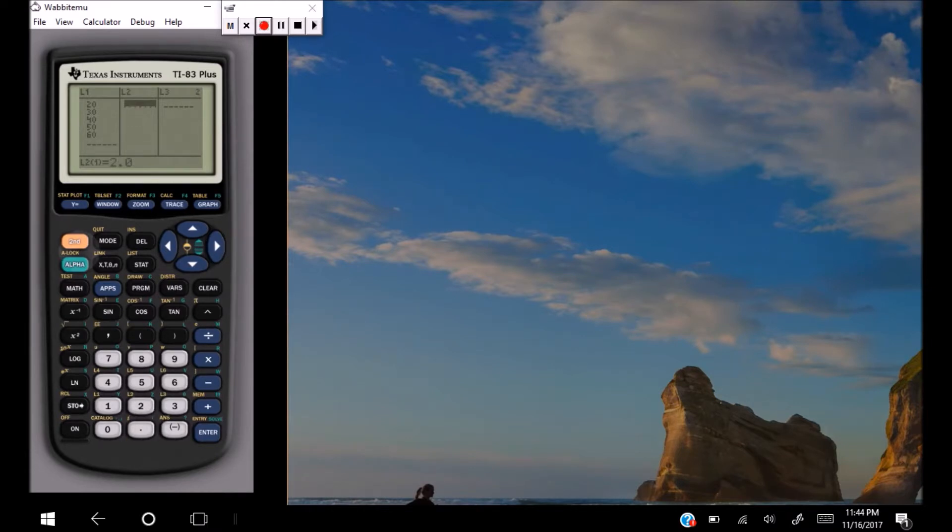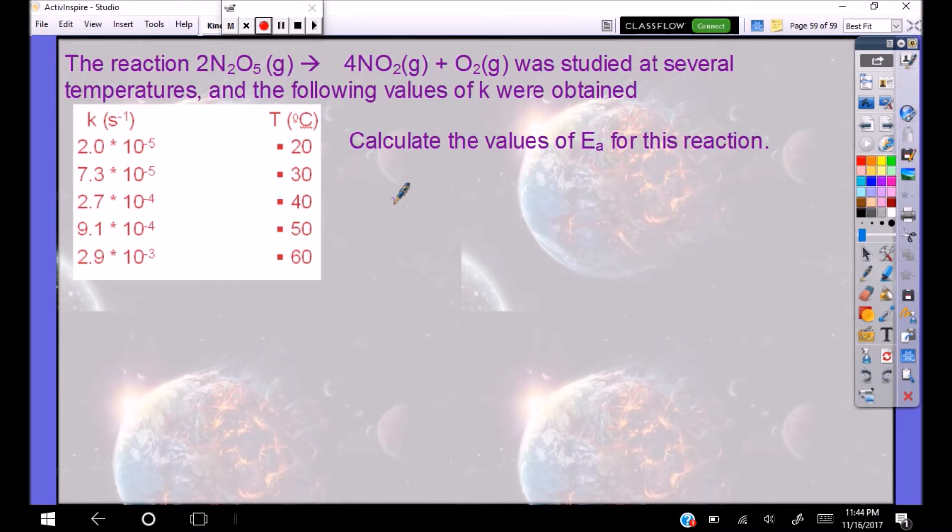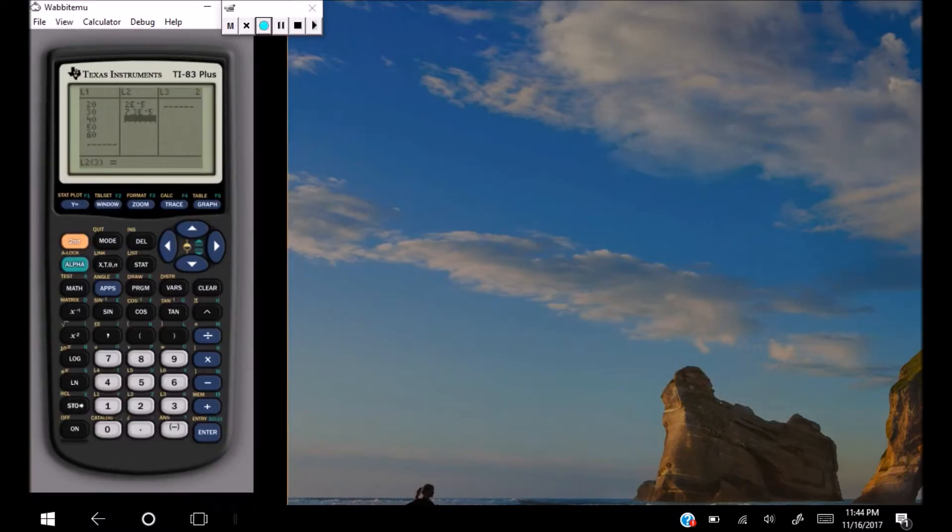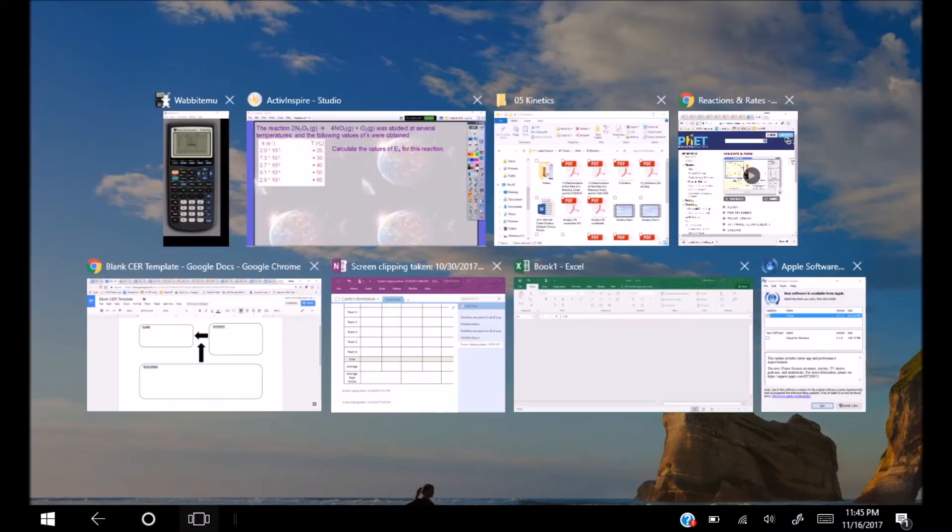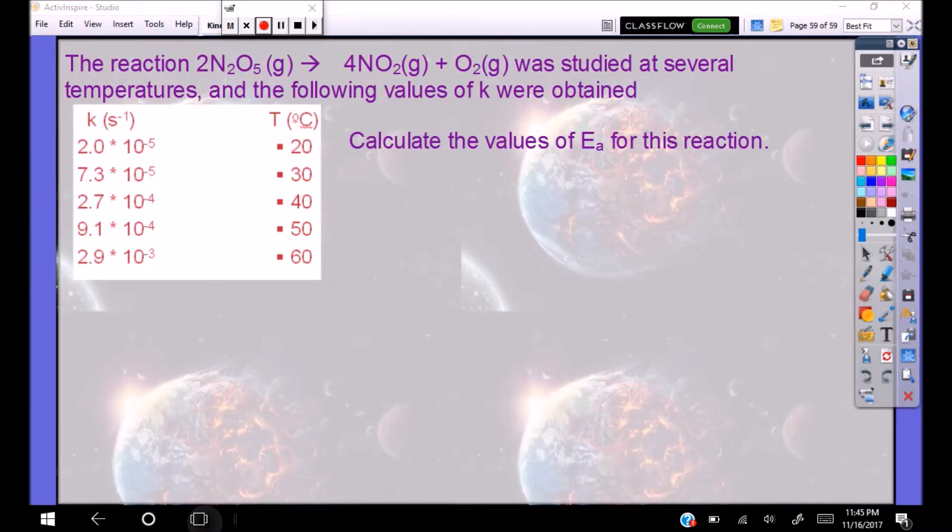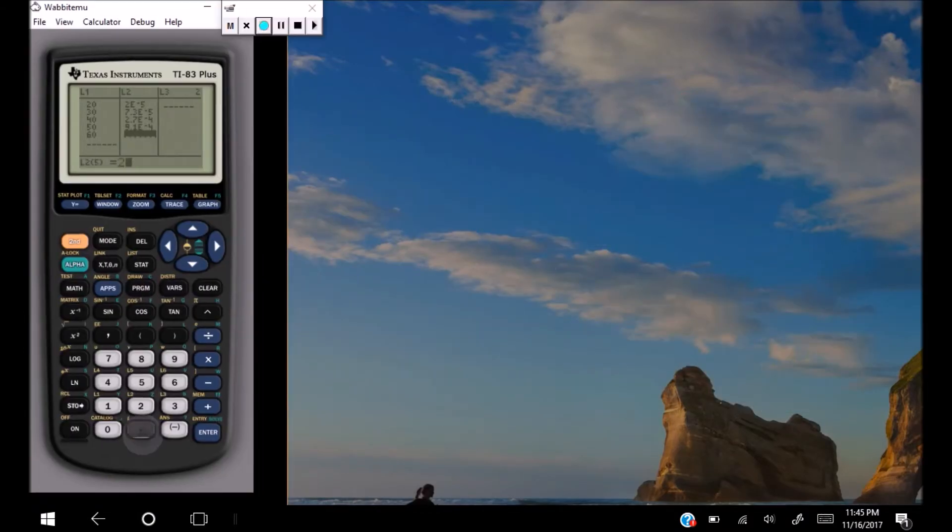And I have 2.0 times 10 to the negative fifth. 2.0 e, e negative 5. What was it? 7.3 e negative 5. And then I've got 2.7 and 9.1. It's a negative fourth. 2.7 e, negative 4. And 9.1 e negative 4. Right? That's what I said. Yep. And then my last one is 2.9 times 10 to the negative third. So 2.9 e negative 3. Cool.